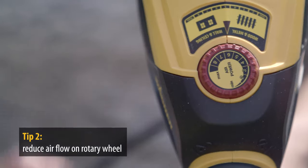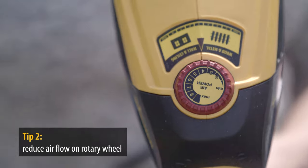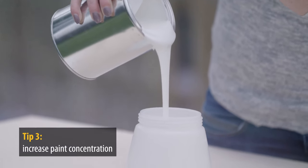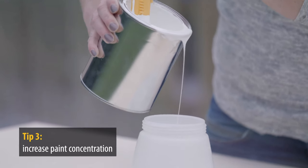Two, the airflow is too high. This can be reduced by turning the wheel on the top of the device. Three, you have diluted the paint too much. Simply add some more paint.